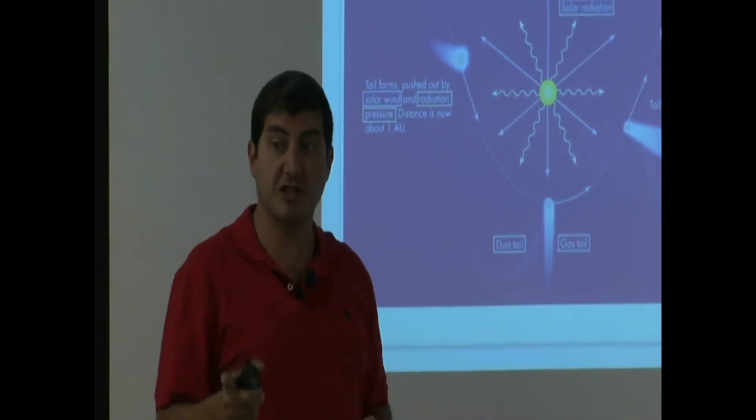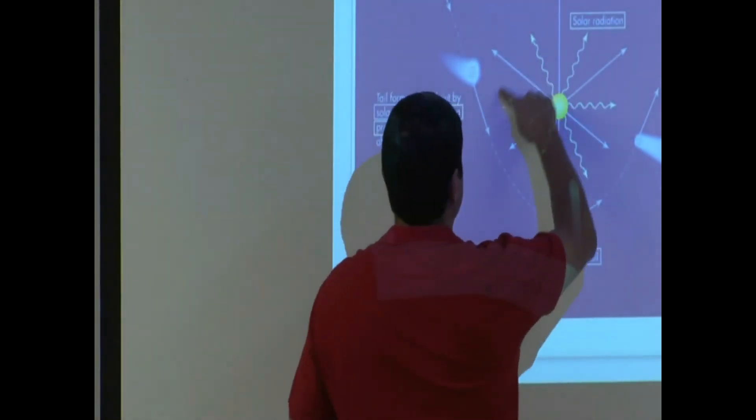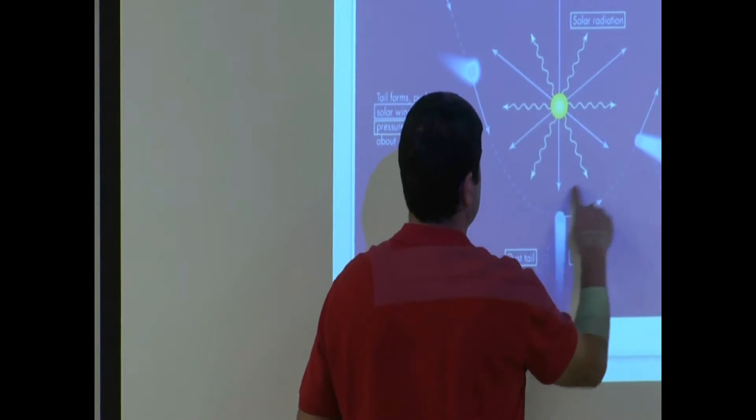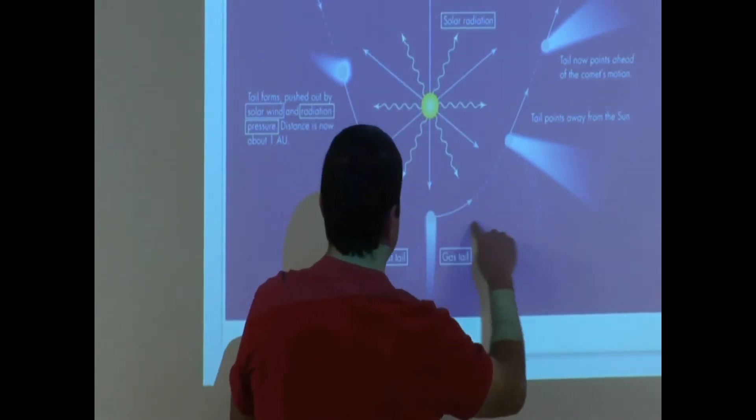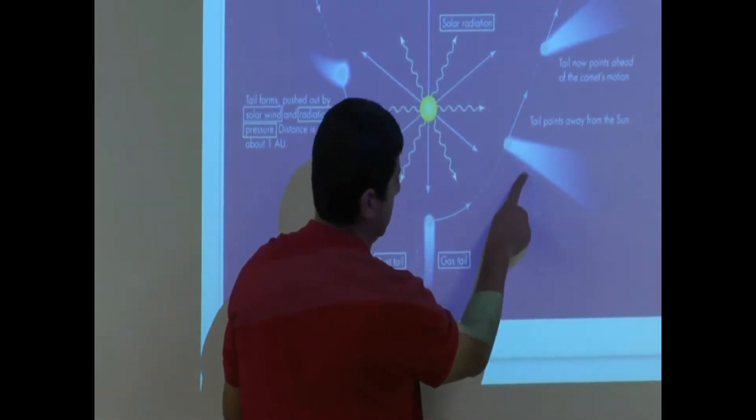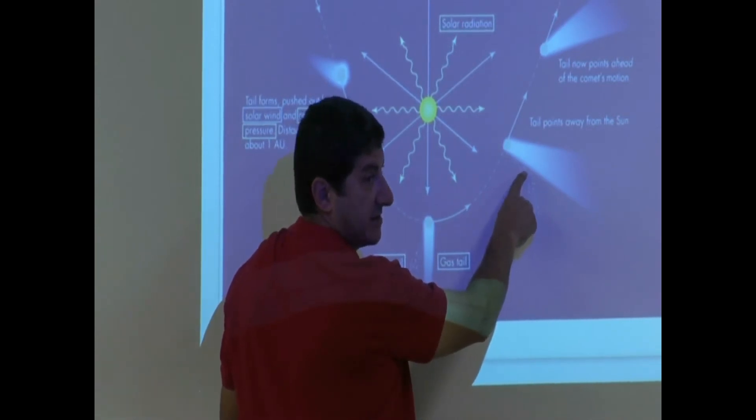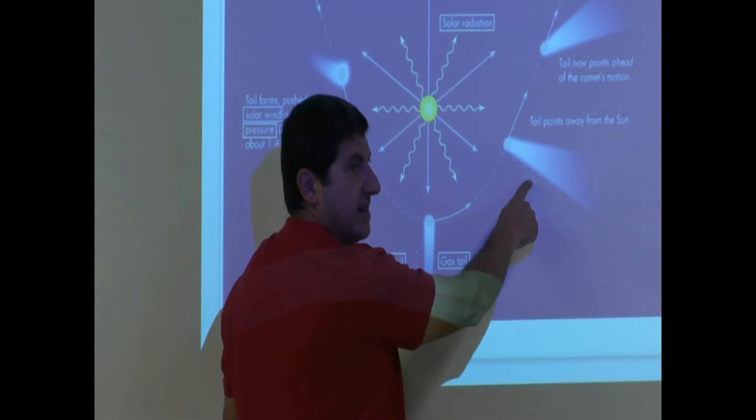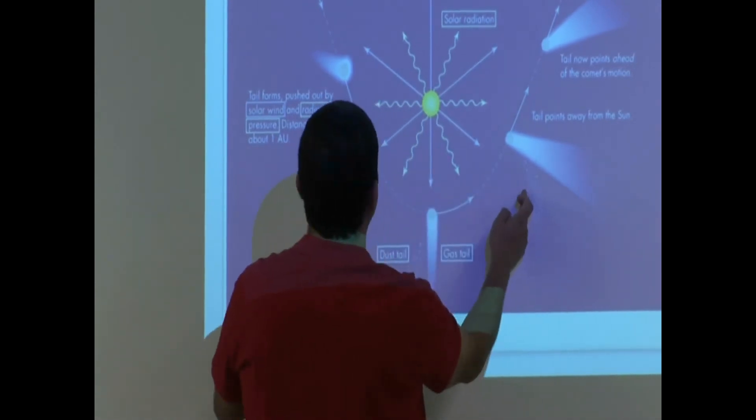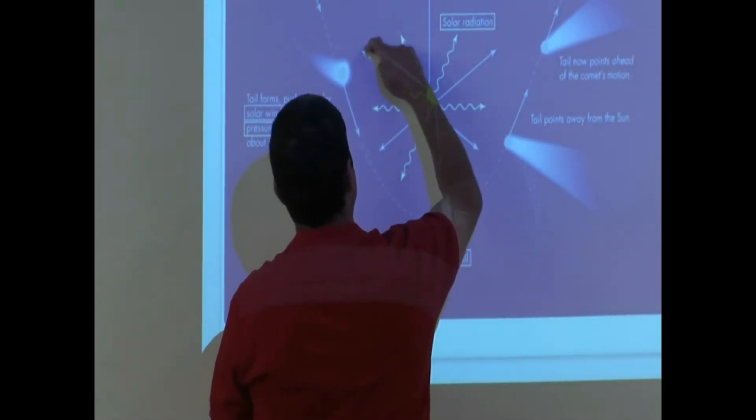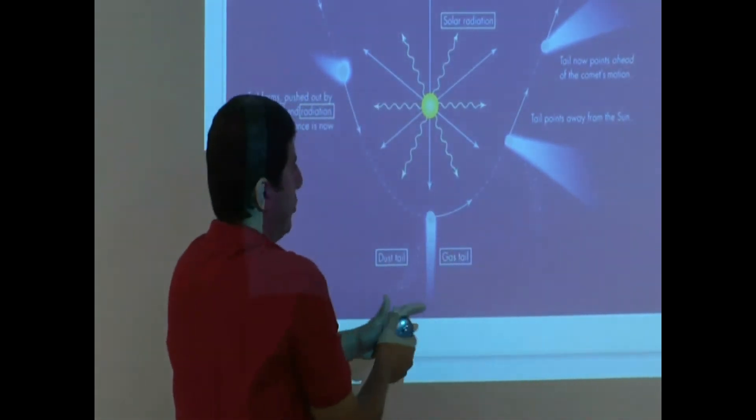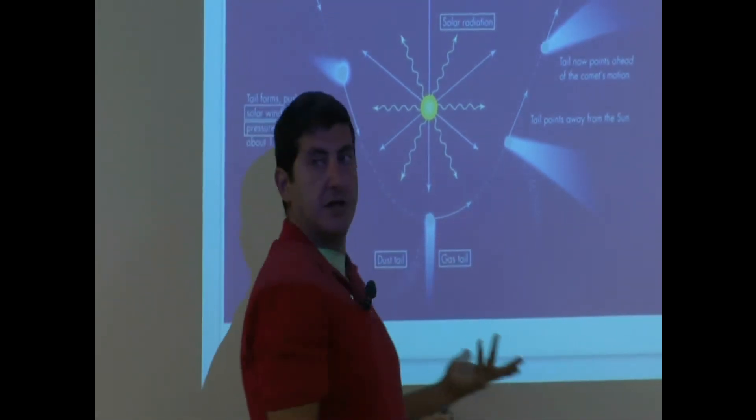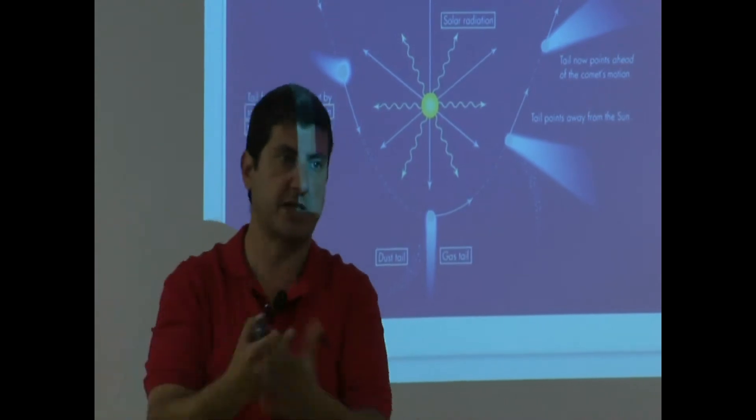Remember we talked about meteor showers the other day? When do meteor showers happen? Imagine, so if the Earth's orbit is like this, you see? So when the Earth comes, you see this is the dust tail? When, let's say the Earth's orbit is like this, and let's say Earth happens to be here when the comet is coming, you see all this dust? That's going to cause a meteor shower. So there's going to come a point where the Earth is either going to be here or here, and then this dust is going to fall to the Earth, and then that's going to cause meteor shower.